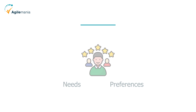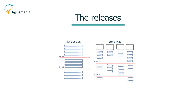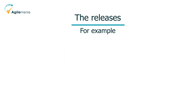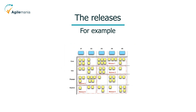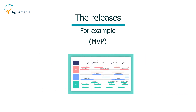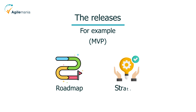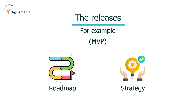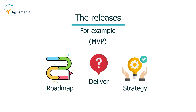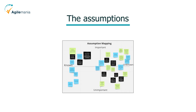The third element is releases — the horizontal slices of the map where you group the user stories into different versions or iterations of your product. For example, you could have a release one that includes the minimum viable product (MVP), a release two that adds more features and enhancements, a release three that introduces new and innovative functionalities, and so on. The releases represent the roadmap and the strategy of your product development and how you deliver value to your users incrementally and iteratively.